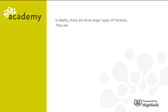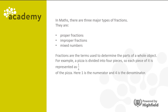In maths there are three major types of fractions: proper fractions, improper fractions, and mixed numbers. Fractions are the terms used to determine the parts of a whole object. For example, the pizza is divided into four pieces, so each piece of the pizza is represented as a quarter. Here the one is the numerator and the four is the denominator.